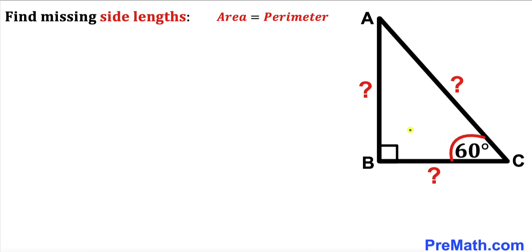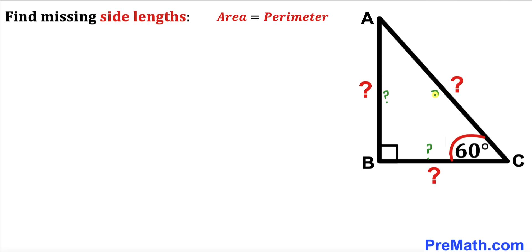Welcome to pre-math. In this video we have this right triangle ABC, such that angle ACB is 60 degrees. Moreover, the area of this right triangle is equal to the perimeter of this very same right triangle. Our task is to calculate all the missing sides: side AB, side BC, and the hypotenuse AC.